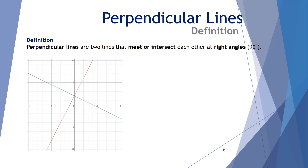Let's now consider perpendicular lines. By definition, perpendicular lines are two lines that meet or intersect each other at right angles — that is 90 degrees. We can see here the red and blue lines intersect at 90 degrees.